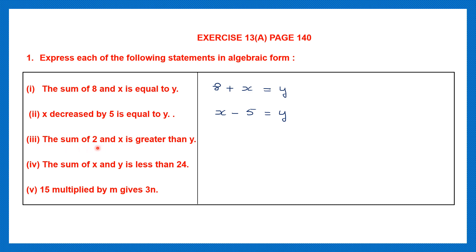The sum of 2 and x is greater than y. The sum of x and y is less than 24. So the sum of x and y means x plus y, and the sum of this is less than 24.